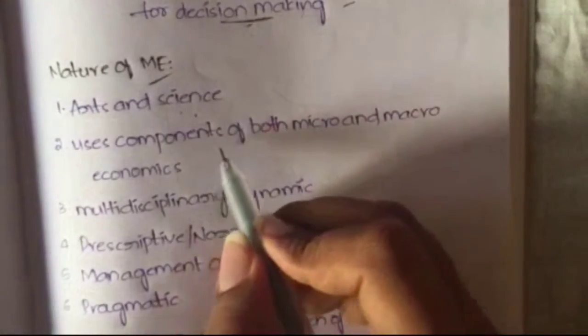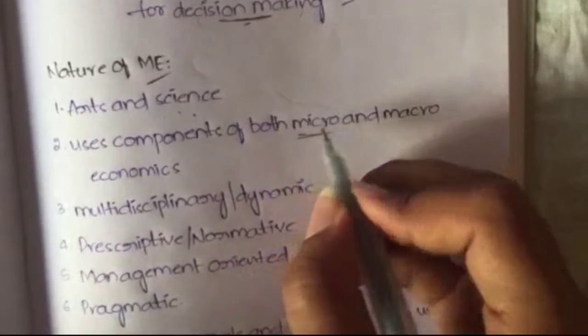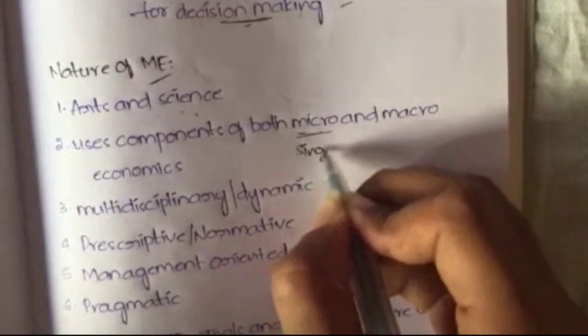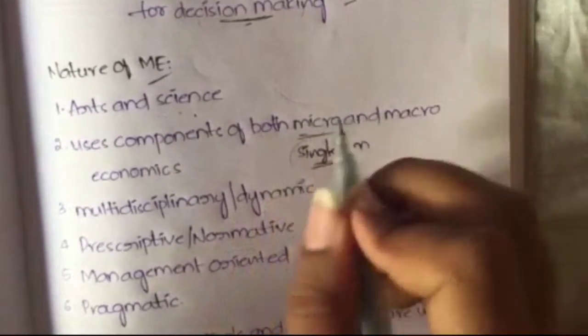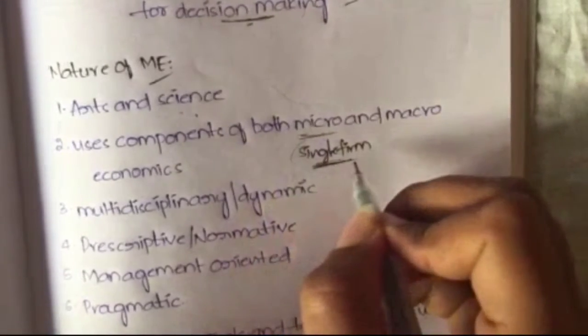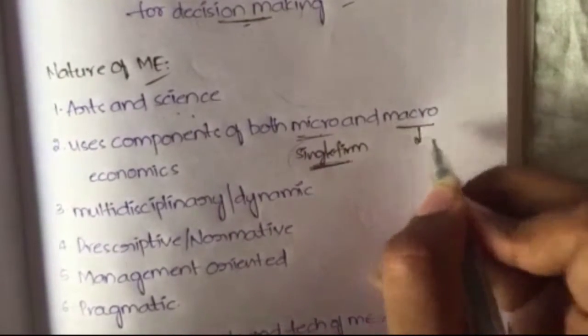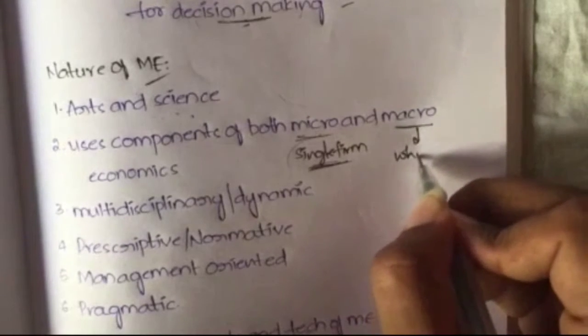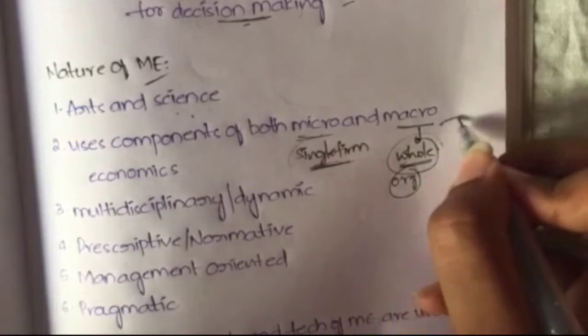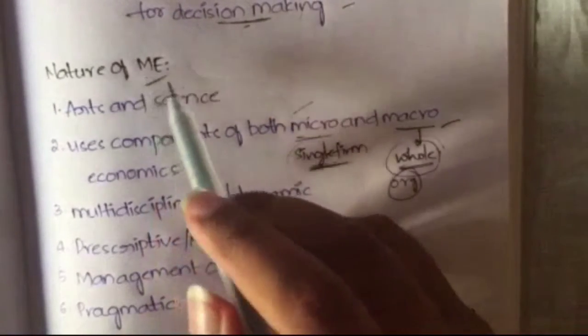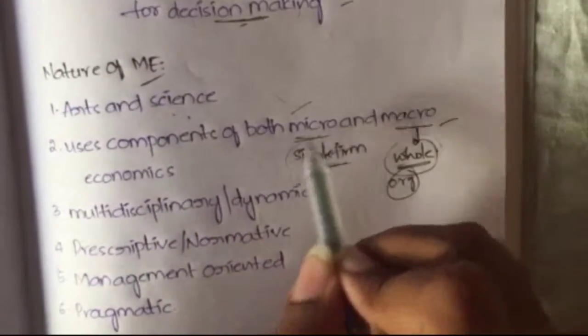The second aspect of its nature is that it uses components of both micro and macro economics. Micro economics deals with a single firm — a small part of the economy or a small industry. Macro economics deals with the whole economy or a big organization. Managerial economics uses components of both.